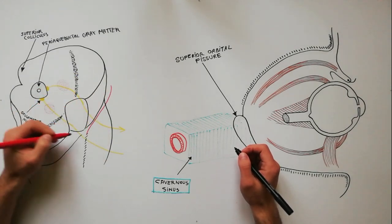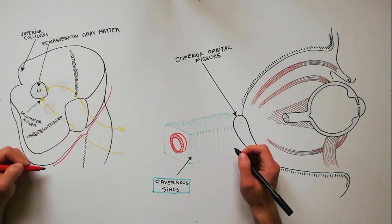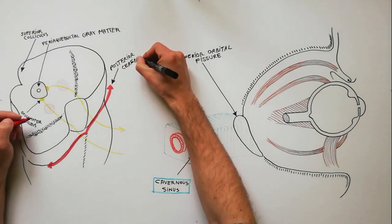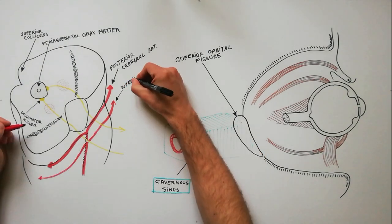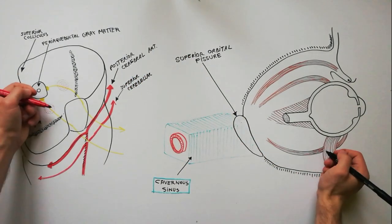On emerging from the midbrain, the oculomotor nerve passes between the posterior cerebral artery located superior to the nerve and the superior cerebellar artery located below the nerve.